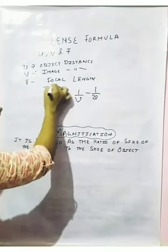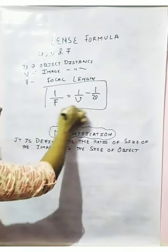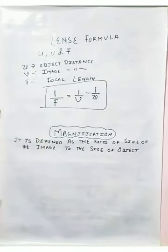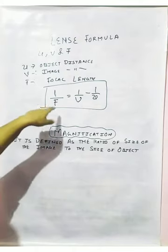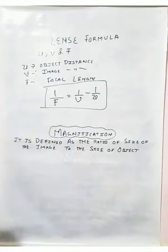The only difference in the formula is the minus sign. In the mirror we have 1 upon F equals to 1 upon V plus 1 upon U, whereas here for the lens we have 1 upon F equals to 1 upon V minus 1 upon U.